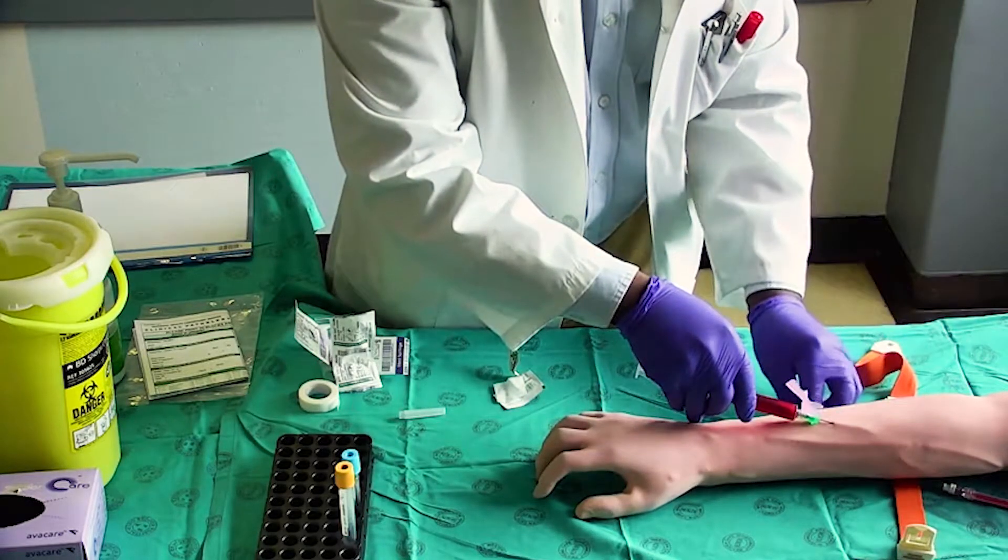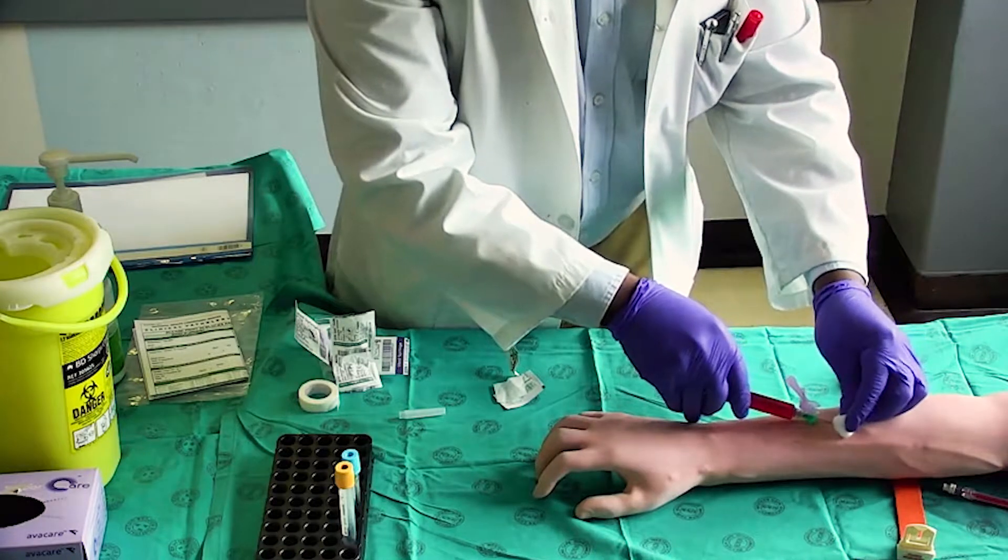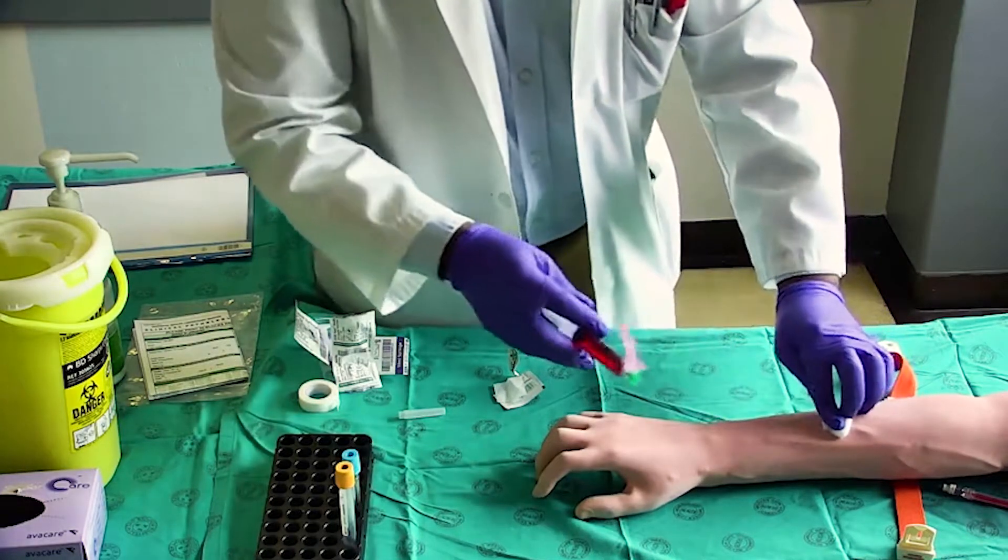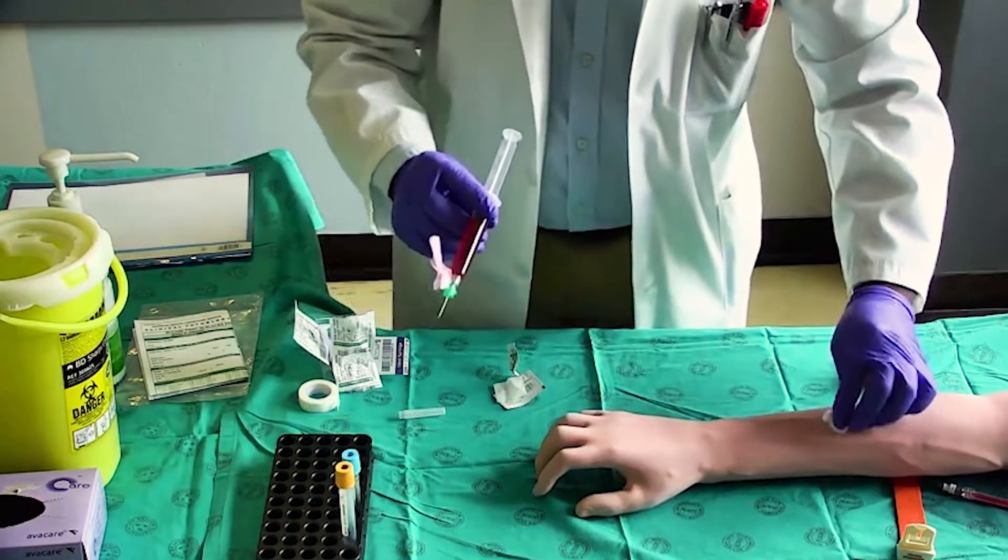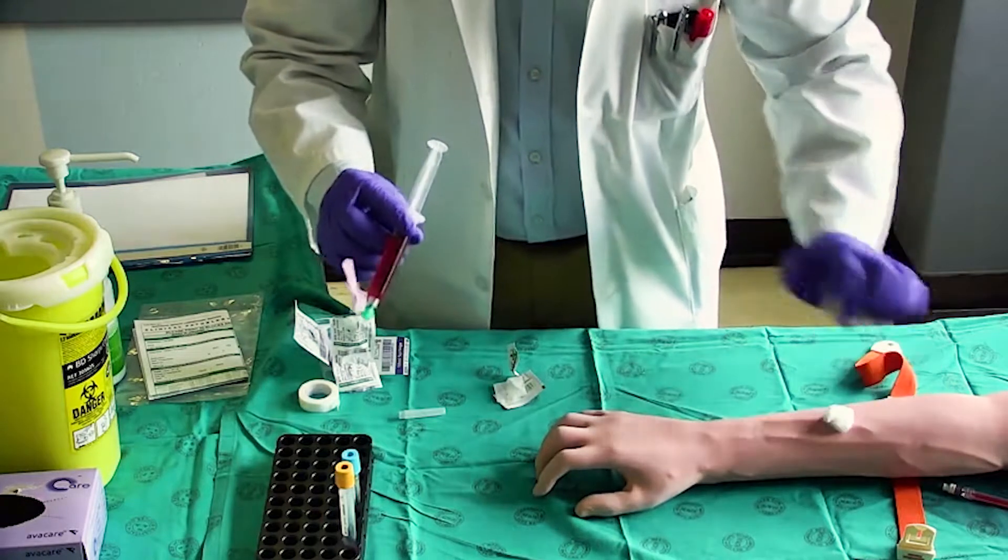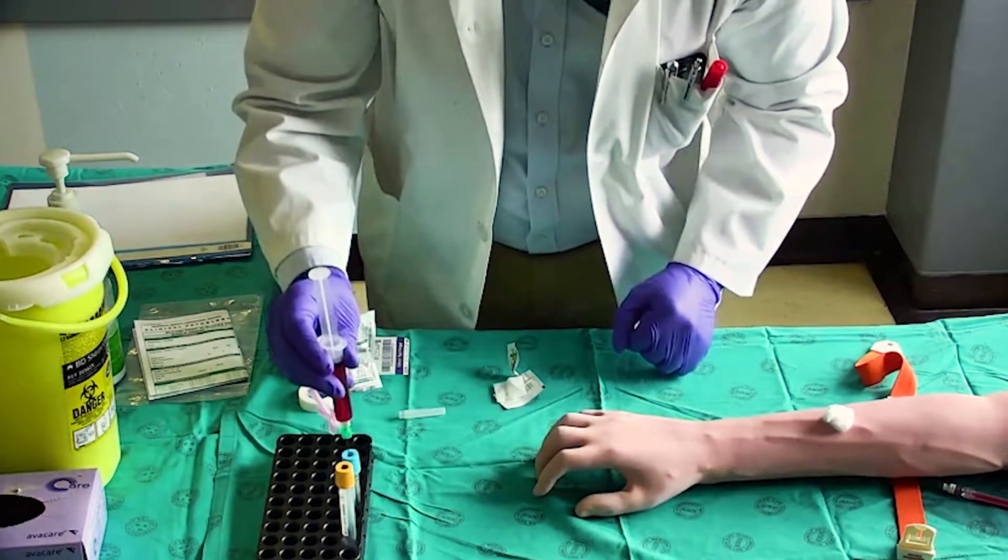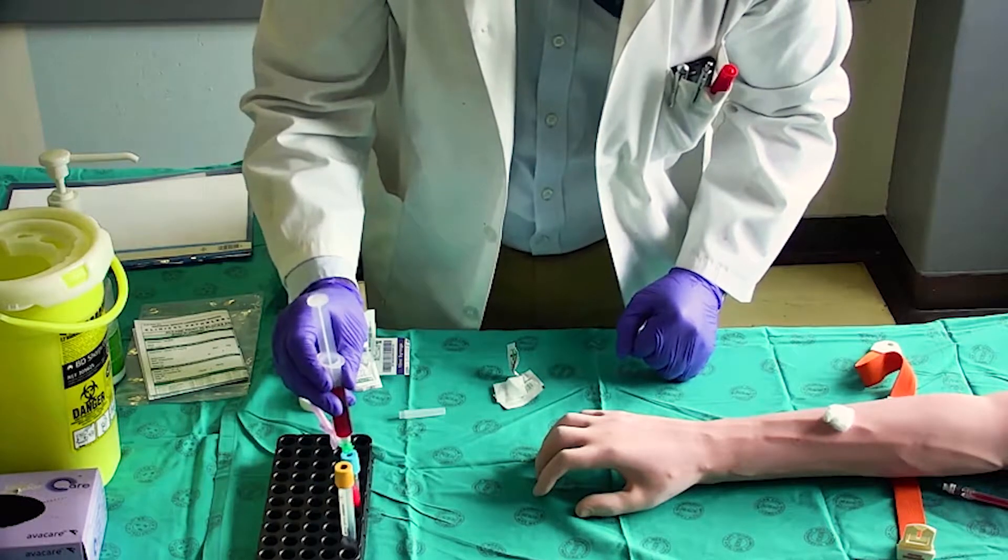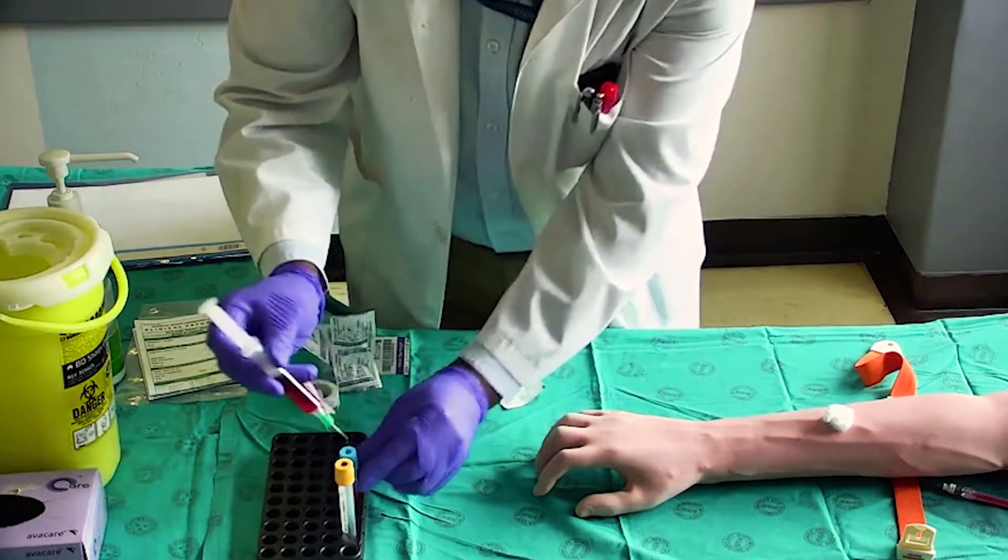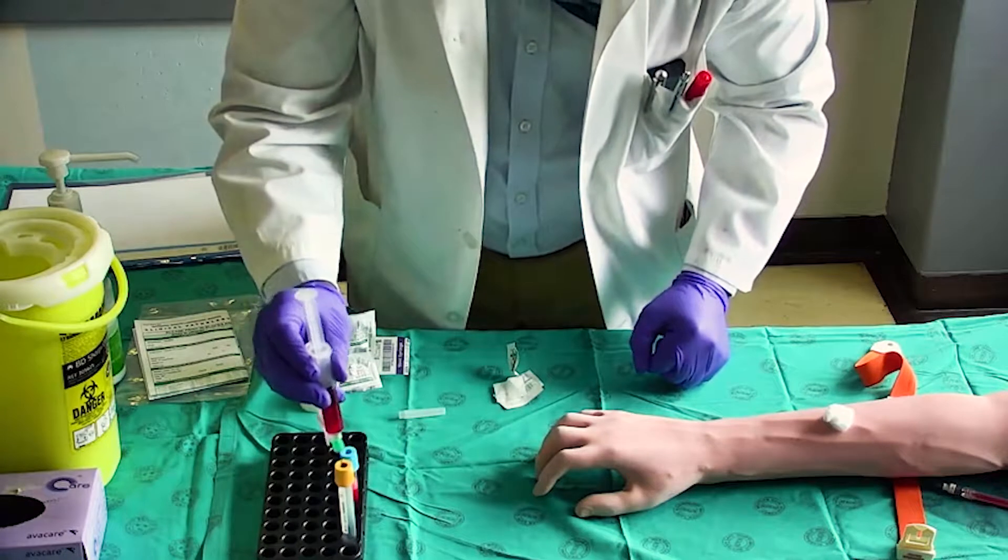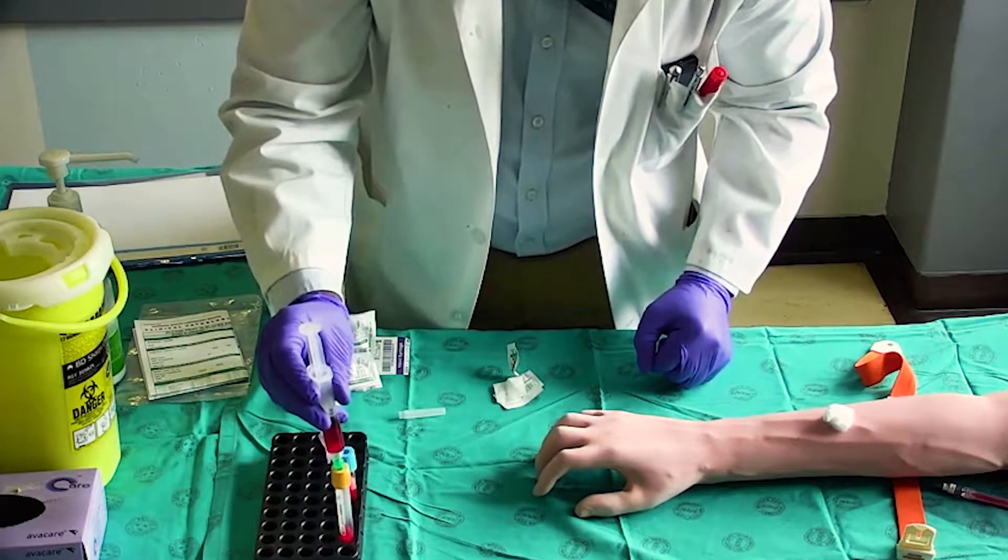Release the tourniquet and withdraw the needle gently. Apply pressure on the site with a cotton wool ball. Do not change needles between blood sample collection and the inoculation of blood into the tubes. Inoculate blood into the blood tubes. Do not hold onto the tube while inoculating as this increases the risk for a needle stick injury.